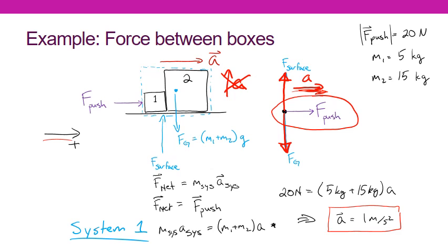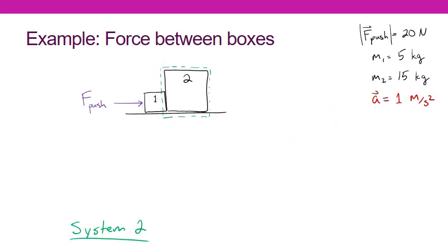Knowing the acceleration of the whole system, I now know the acceleration of each box individually, and that will let me work towards finding out what the force of each box is on the other box. To find the forces between the two boxes, I'm now going to define a new system — one that only includes box 2. I would still expect box 2 to accelerate to the right, with the same acceleration I found for the two-box system.